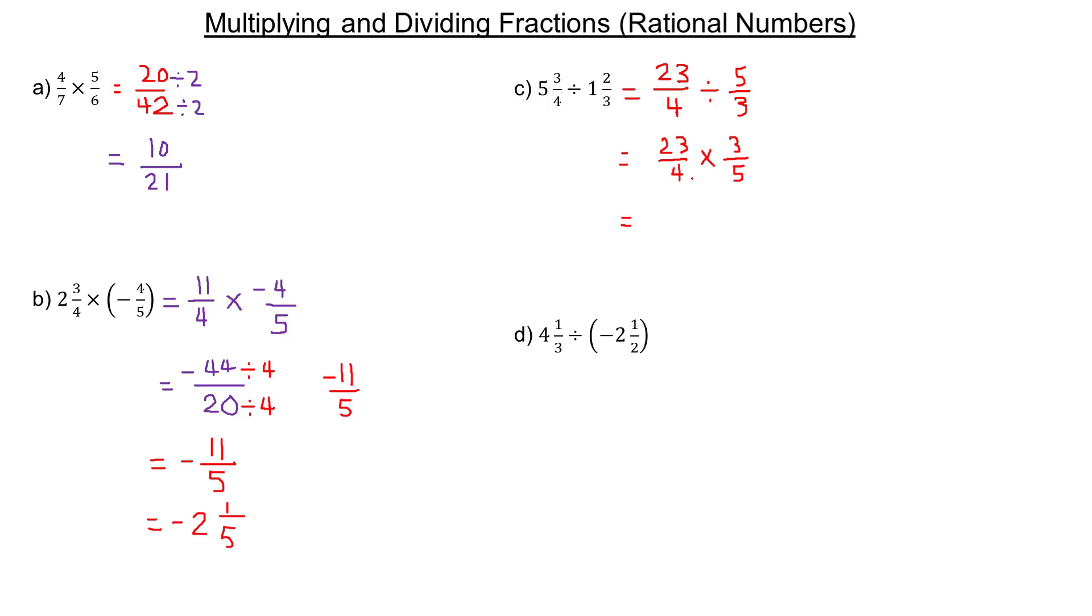We multiply 23 by 3. 23 times 3: 20 times 3 is 60, and 3 times 3 is 9, so that's 69. In the denominator, 4 times 5 is 20, giving us 69/20.